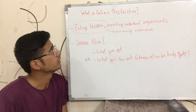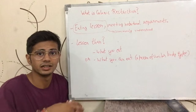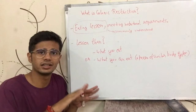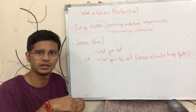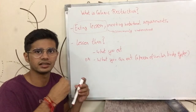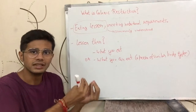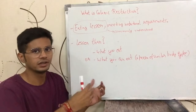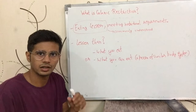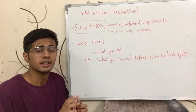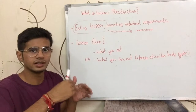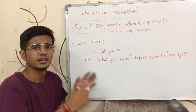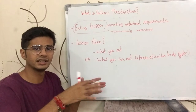Hi guys, this is Ushant Kochar. Today we are going to talk about what caloric restriction is. Caloric restriction is putting a restriction on the calories that you take in — basically restricting the calories that you eat. Caloric restriction means eating lesser, along with meeting the nutritional requirements of your body. Commonly, people just take the meaning as simply eating lesser.